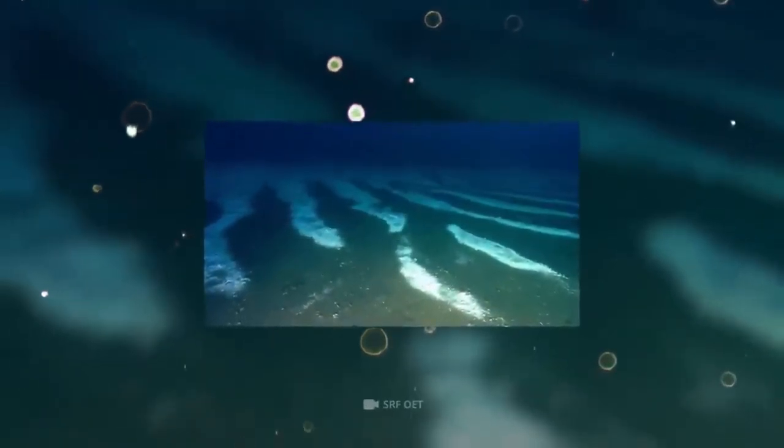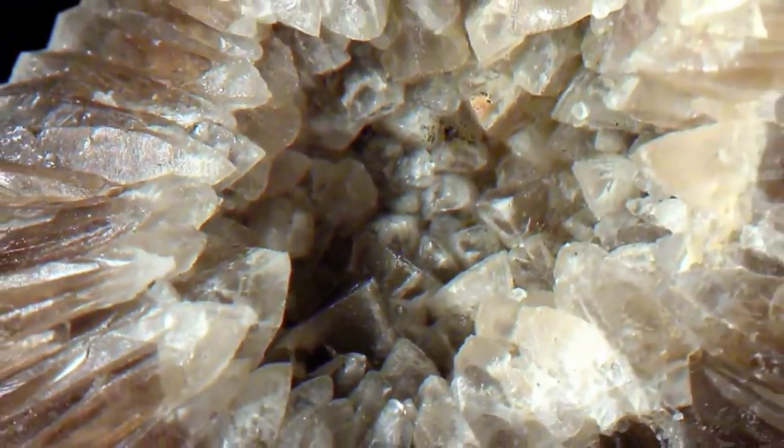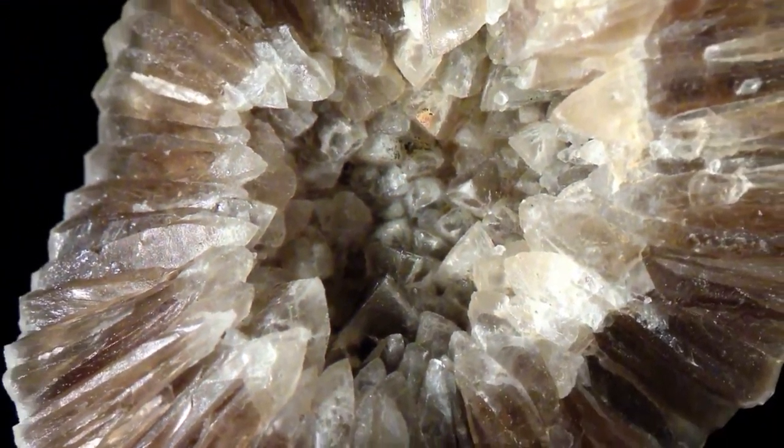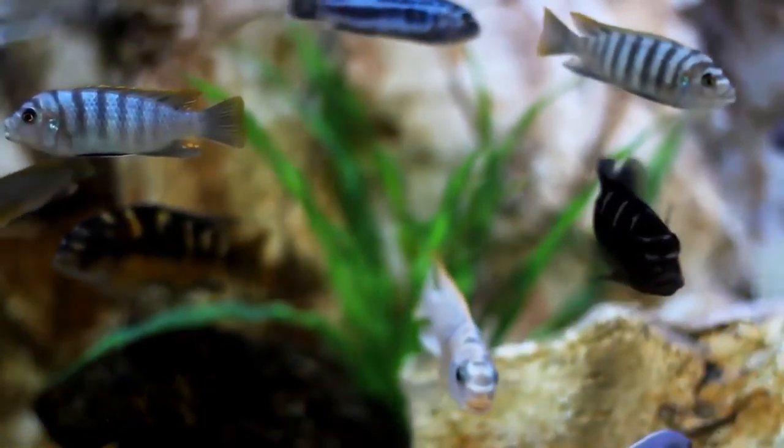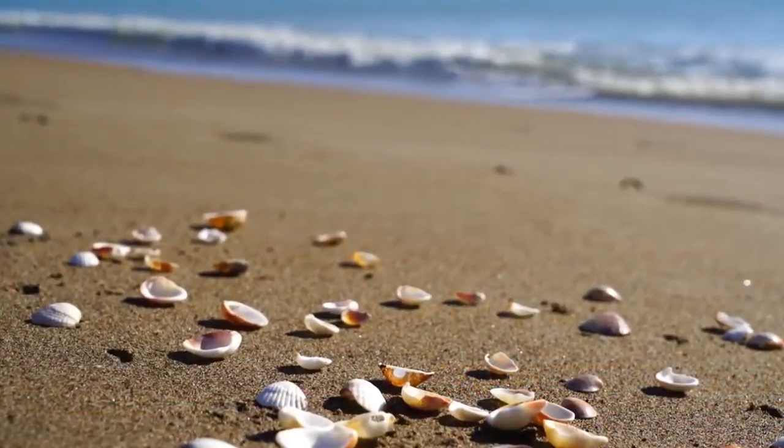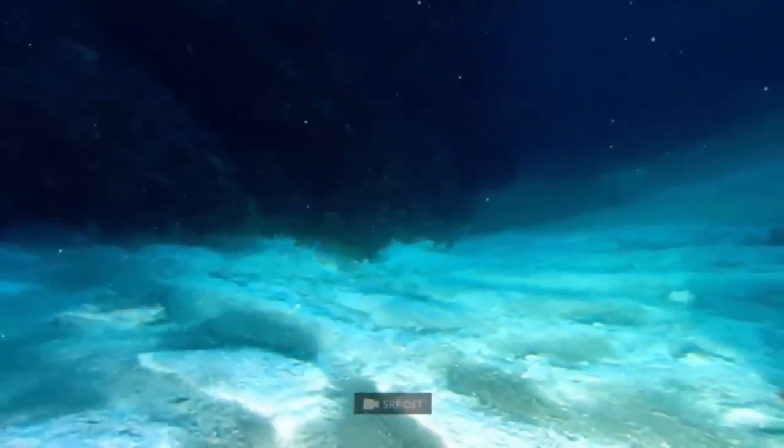The seafloor is chalk white, since the majority of it is covered with calcite. On the surface, this is found as limestone and chalk. But at the bottom of the ocean, calcite is formed from the skeletons and shells of marine animals, as well as calcareous algae. This layer is a true airbag for the ocean.